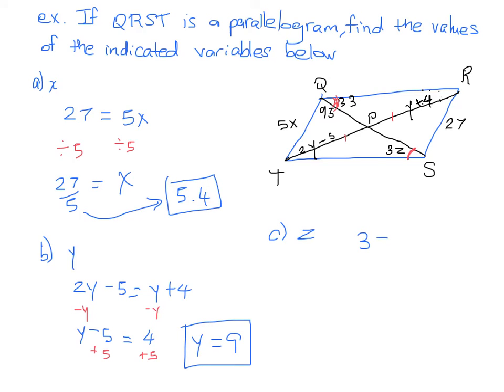So 3Z is equal to 33. And solving that, we can divide both sides by 3, and we get that Z is equal to 11. And that's it. And that's how you deal with figuring out all these unknowns using the diagonals to help you.